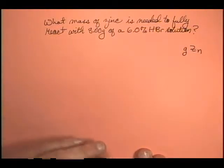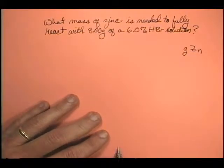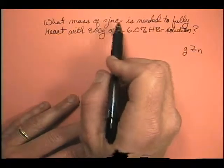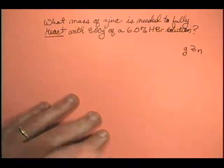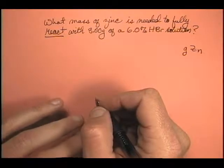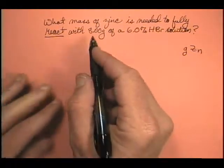Now, notice there's a key word in here. What's that key word that tells you you need something that's not provided? What mass of zinc is needed to fully react? React. That tells me I need a balanced equation. There's some stoichiometry action somewhere in this problem. So I'm going to go ahead and write that out.